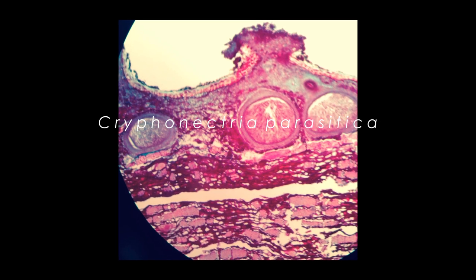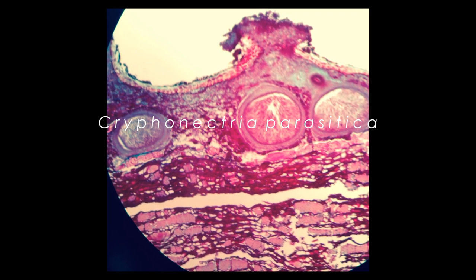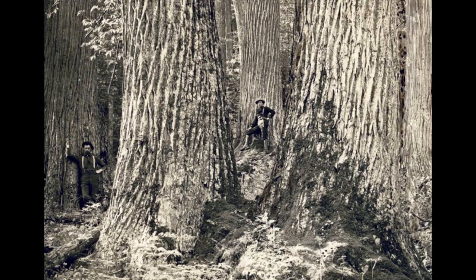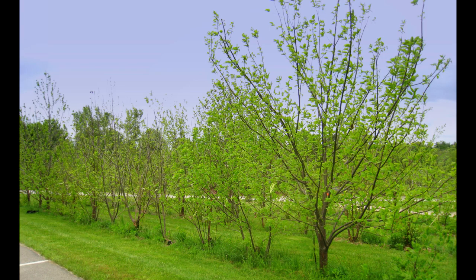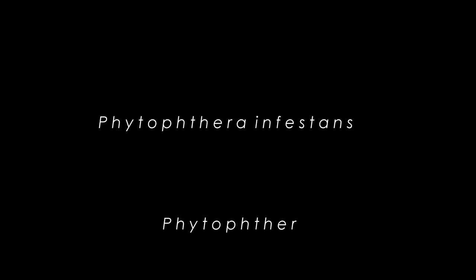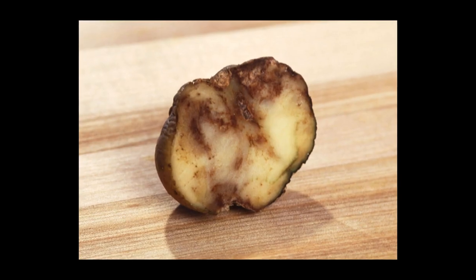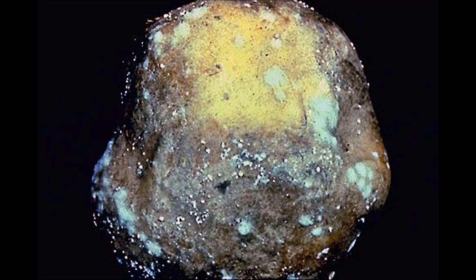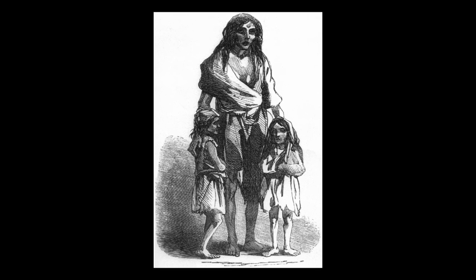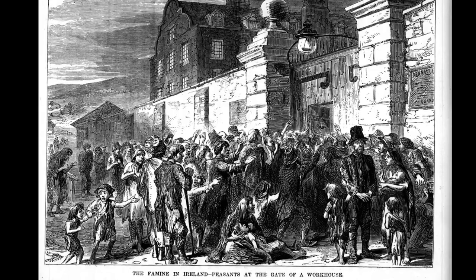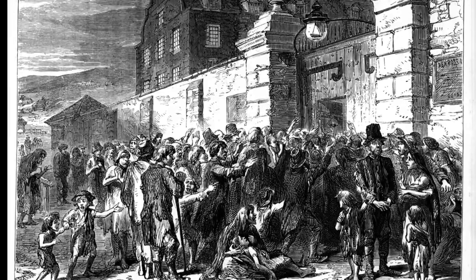In the early 1900s, chestnut trees in the US fell under attack from Cryphonectria parasitica, a fungus accidentally introduced from Japan. In 1904 there were over 4 billion chestnut trees in the US, but today there are only 3,000. The water mold Phytophthora infestans was responsible for the Great Irish Potato Famine in the 1850s, which led to the starvation of over a million people and caused a million more to flee Ireland.